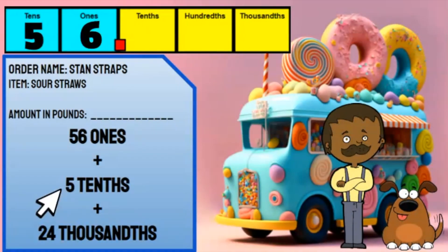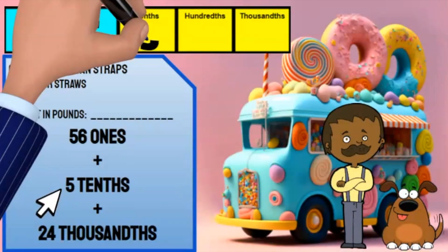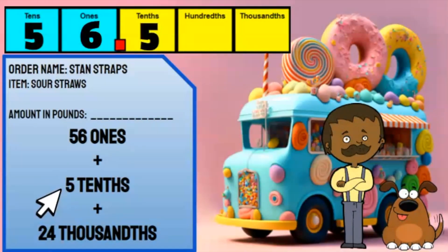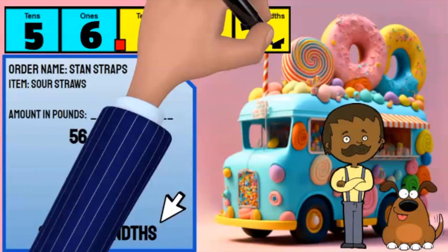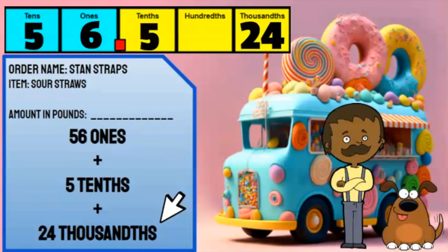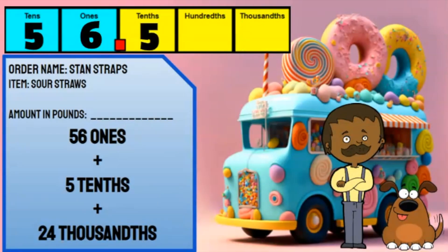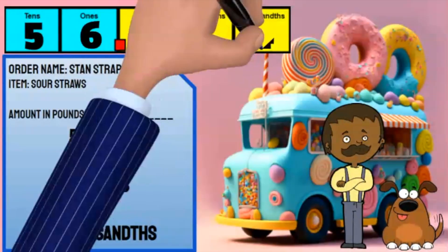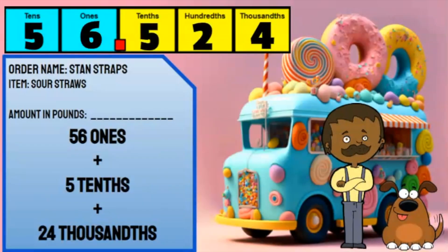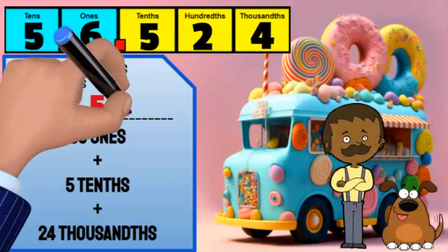Next, the expression shows there are five tens. This one-digit number does not need to be regrouped. Finally, the expression lists 24 thousands. I can place 24 in the thousands place, but it must be regrouped. 24 thousands can be regrouped as two ten-thousands and four thousands.